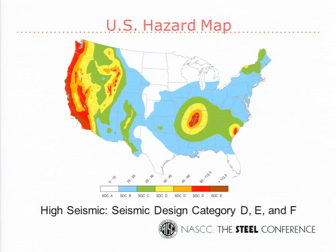This session is for high seismic regions — where what we do is different from low seismic. Low seismic is very simple: you say R equals 3 and have a nice day. You use AISC 360 and don't worry about the stuff we're going to talk about today. It ramps up when you go to high seismic.